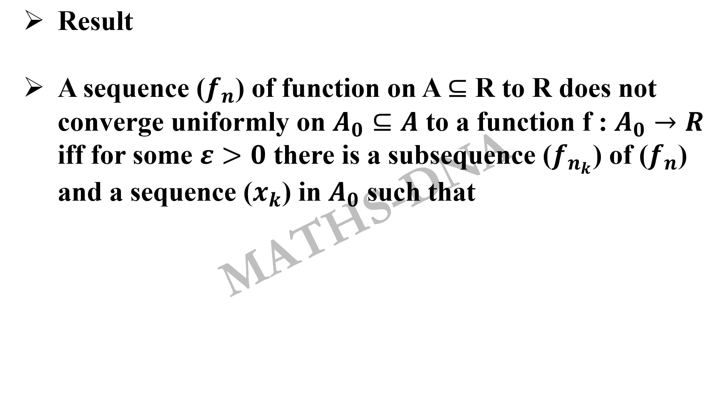Also we have a simple result which says that a sequence f_n of functions on A, which is subset of R to R, does not converge uniformly. Because in option b they are asking about uniform convergence, so we are using this result to check whether it is uniformly convergent or not.